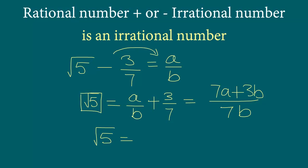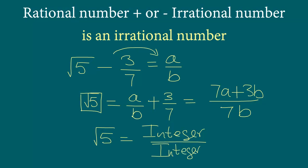In the numerator we have an integer, and in the denominator we have an integer which is 7b. Since b is not equal to 0, 7b is not equal to 0, which means what we have here is a rational number.